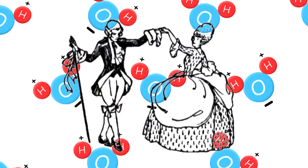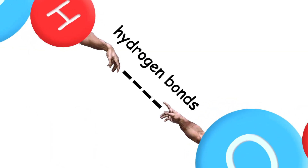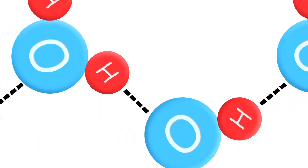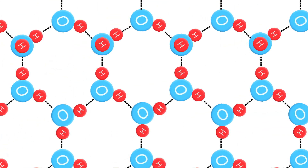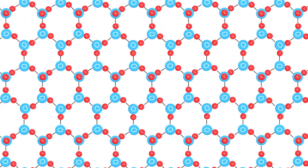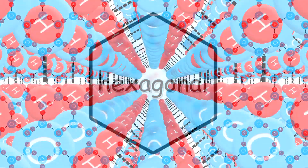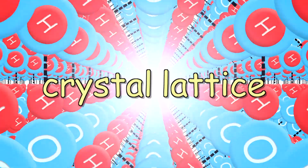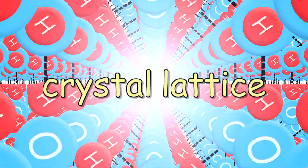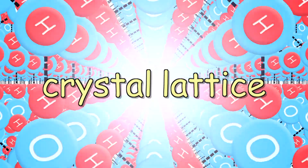As the mass of H2O stops slam dancing and starts doing more of a molecular minuet, the water molecules are able to make longer-lasting hydrogen bond connections with each other. The molecules freeze in place, arms locked in six-sided or hexagonal groups that connect to form a 3D network called a crystal lattice.